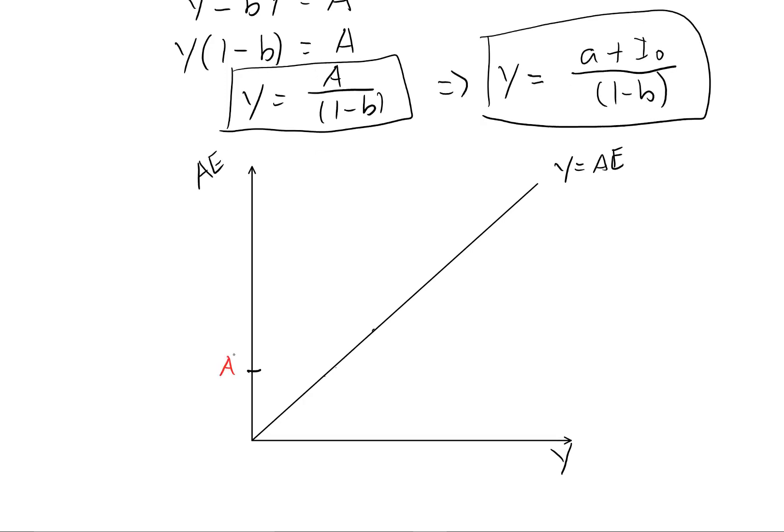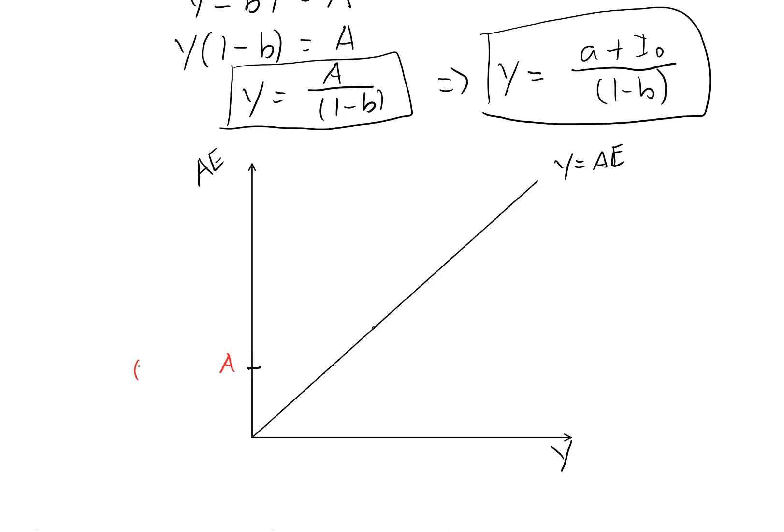And so this intercept, this Y intercept here, is capital A. And another way to say this would be little a plus I zero, which equals this capital A. So that's our intercept because no matter what the level of Y, that's how much aggregate expenditure we have.